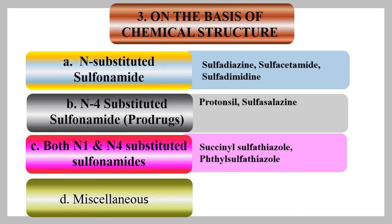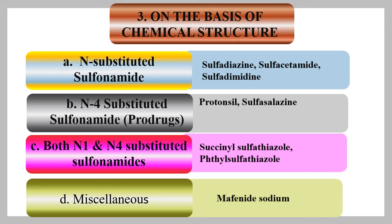Sulfonamides with both N1 and N4 positions substituted include succinylsulfathiazole and phthalylsulfathiazole — in succinylsulfathiazole, succinic acid is substituted at the N4 site, and phthalic acid is substituted at the N4 site in phthalylsulfathiazole. The miscellaneous class includes mafenide sodium; in some references mafenide is categorized under N4-substituted sulfonamides.